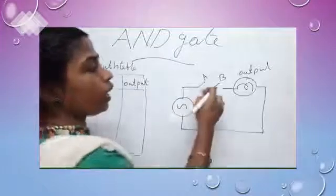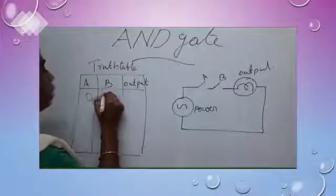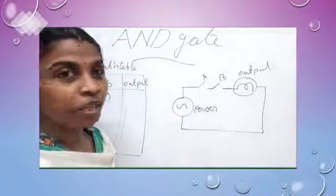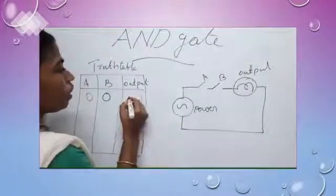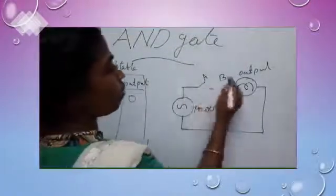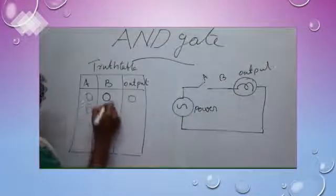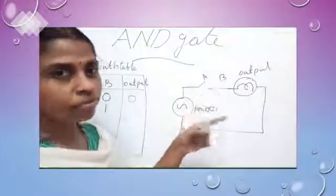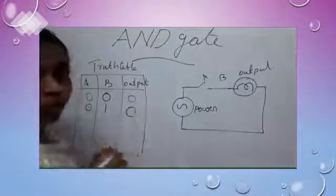Suppose both A and B are off — that means the value of A and B is zero. In this case, is there any closed circuit? No! There is no closed circuit, so the output is zero or low voltage. Next, suppose switch A is off and B is on — the value of A is zero and B is one. Is there any closed circuit? No! So the output is zero, low voltage.